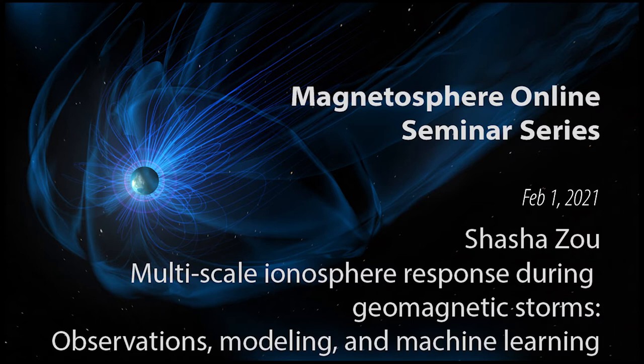Shasha received her bachelor's degree in 2004 from the University of Science and Technology of China. She then completed her PhD in 2009 at UCLA. Her general research interest is to study the dynamic interaction between the solar wind, magnetosphere, and ionosphere-thermosphere as a coupled system.